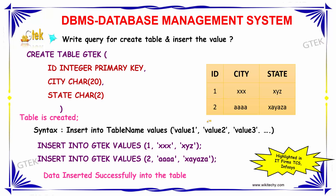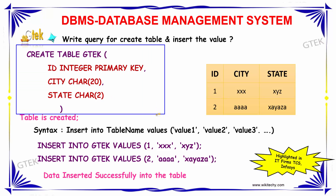You have to write a query for creating a table and inserting values. Creating a table is done using the syntax shown here. The query to create a table is: CREATE TABLE followed by the table name — here we have 'gtech' — having the parameters as id of type integer, where id is the primary key, followed by city of type character.